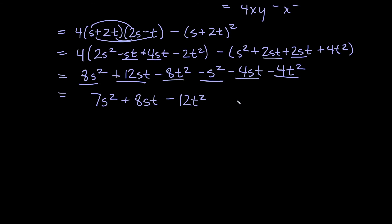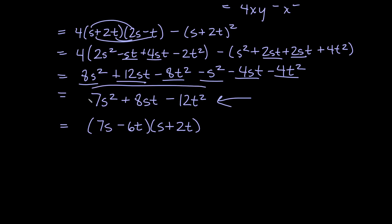We can leave the answer as 7s² + 8st − 12t², or factor it as (7s − 6t)(s + 2t). Either answer is fine. Hopefully this helps you with your multivariable chain rule. Thanks for watching — we'll see you in the next video.